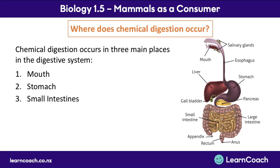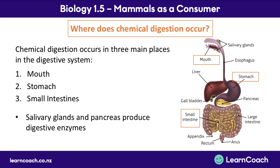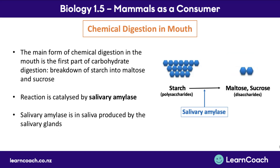Now let's look at where these reactions happen. Chemical digestion occurs in three main places: the mouth, the stomach, and the small intestine. The salivary glands and pancreas are also important as they produce digestive enzymes, and the gallbladder releases bile. In the mouth, the main chemical digestion is the first part of carbohydrate digestion — the breakdown of starch into maltose and sucrose by salivary amylase, which is found in the saliva produced by the salivary glands.